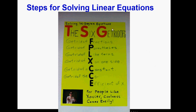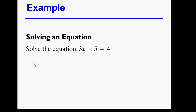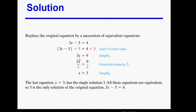Here's a linear equation — you can see it is one because it has x to the first power. We're going to do the same thing to both sides. We'll add 5 to both sides to get rid of the constant.